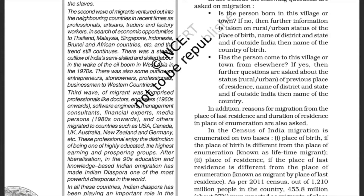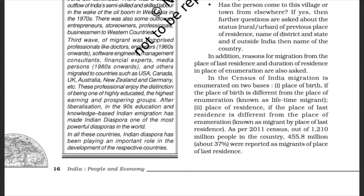There was also some outflow of entrepreneurs, store owners, professionals, and businessmen to Western countries. The third wave of migrants comprised professionals like doctors and engineers from 1960 onwards, and software engineers, management consultants, financial experts, and media persons from the 1980s onwards, who migrated to countries such as USA, Canada, UK, Australia, New Zealand, and Germany. These professionals enjoyed the distinction of being among the highest earning and most prosperous groups. After liberalization in the 90s, education and knowledge-based Indian emigration has made the Indian diaspora one of the most powerful diasporas in the world.